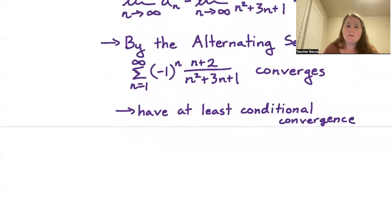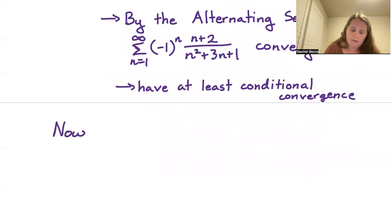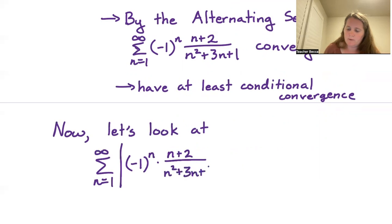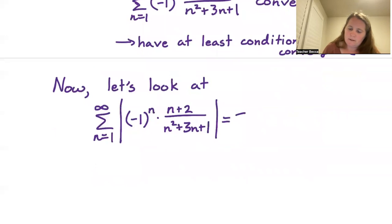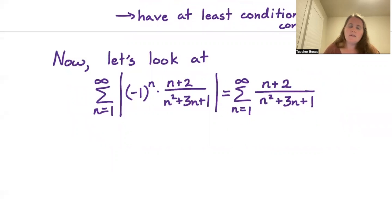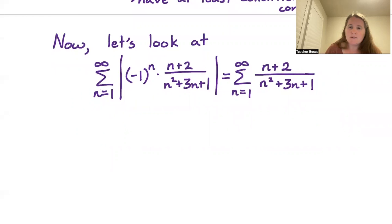Now we have to look at the absolute value terms: the sum from n equals 1 to infinity of the absolute value of negative 1 to the n times n plus 2 over n squared plus 3n plus 1. This simplifies to the sum from n equals 1 to infinity of n plus 2 over n squared plus 3n plus 1. For large n this behaves like 1 over n, so let's use the limit comparison test with b sub n equal to 1 over n.